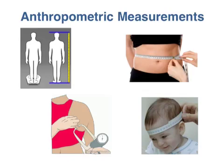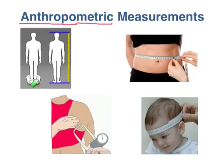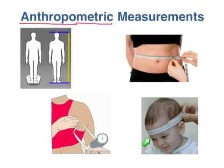One key component of a physical examination in nutrition assessment is taking anthropometric measurements. The prefix 'anthropo' means pertaining to humans, and 'metric' means measurement. Standard anthropometric measurements include height and weight, which are key indicators of both over-nutrition and under-nutrition and can be tracked over time in children to monitor growth. Waist circumference helps determine the distribution of fat, particularly abdominal fat. Skinfold measurements determine the thickness of subcutaneous fat. And head circumference is used in children to monitor brain development — as children grow, their head size should grow as the brain grows inside the skull.